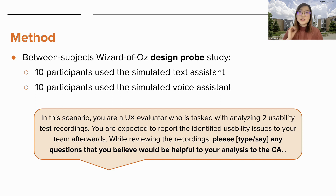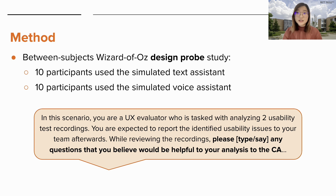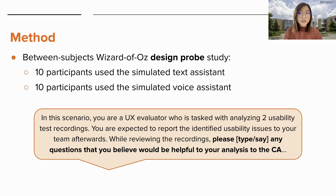In order to answer these research questions, we conducted a between-subjects design probe study. Since it is still challenging to leverage AI algorithms to accurately detect usability problems and provide natural language responses, we adopted a Wizard of Oz design to simulate these agents so that we could better focus on answering our research questions. In the study, 10 participants used the simulated text assistant while another 10 used the simulated voice assistant. The design probe asked participants to type or say any questions they believed would be helpful while watching two usability recordings.